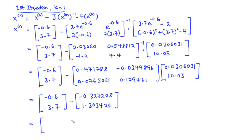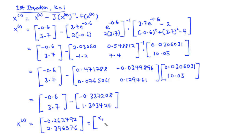At the end of the first iteration, we obtain x of 1 equal to negative 0.262792 and 2.396576. This is the set of values x1, y1 after the first iteration step. However, we are asked to perform two iteration steps, so we proceed to the second one.